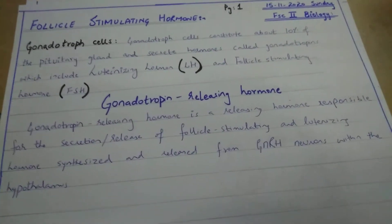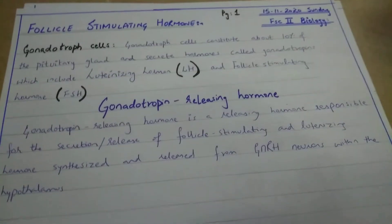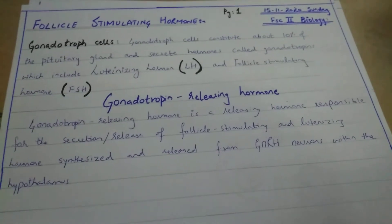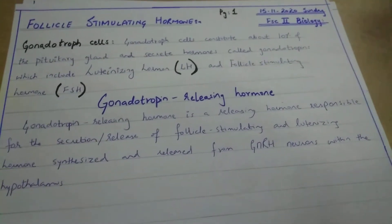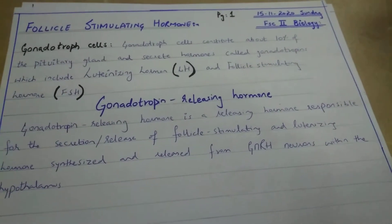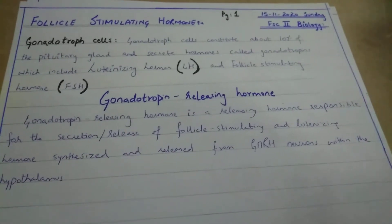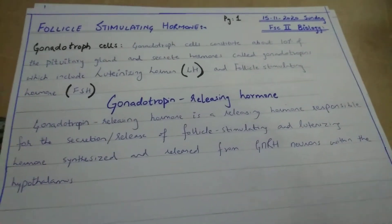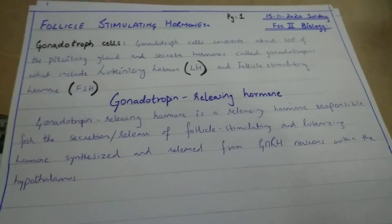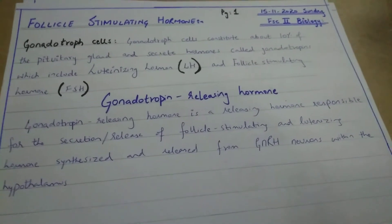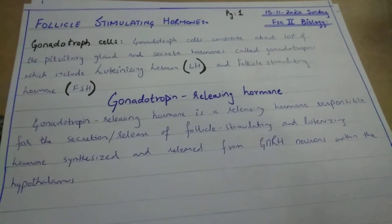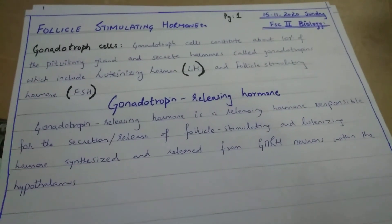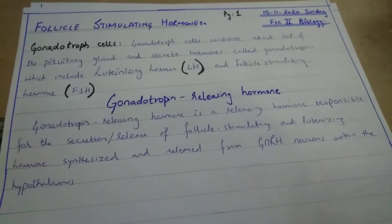The next topic is follicle stimulating hormone. The pituitary gland releases many hormones: growth hormone, adrenocorticotrophic hormone, follicle stimulating hormone, and luteinizing hormone. So the anterior pituitary releases a bunch of hormones.